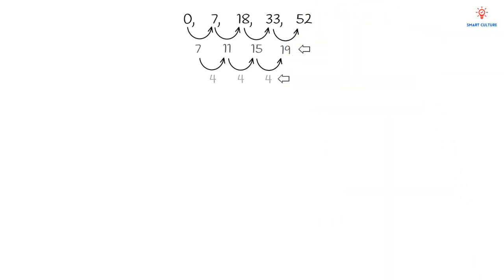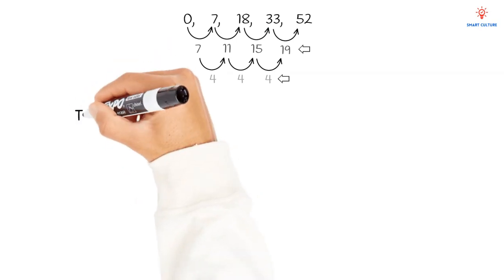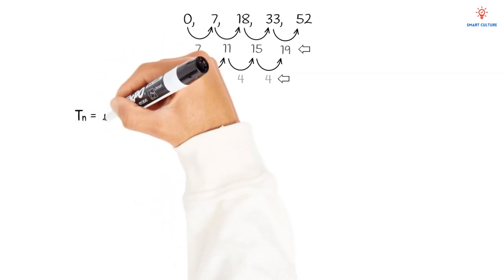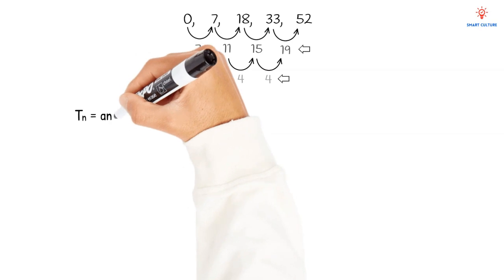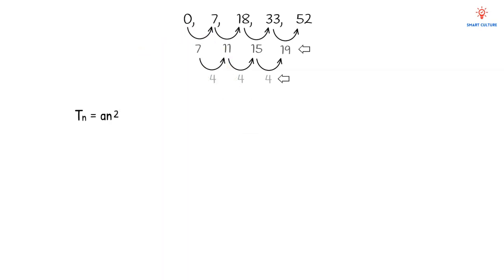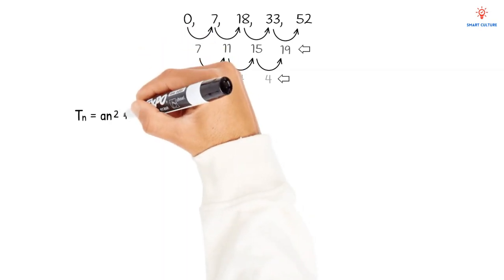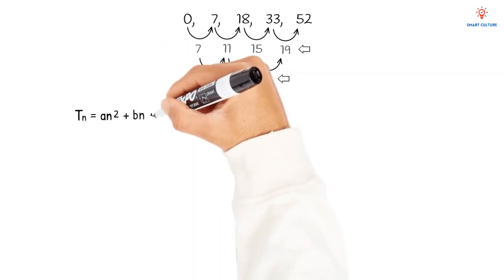Instead of using the formula Tn = a + (n−1)d, we'll use a new formula because this is a different kind of sequence — a quadratic sequence. We'll use the formula Tn = an² + bn + c.